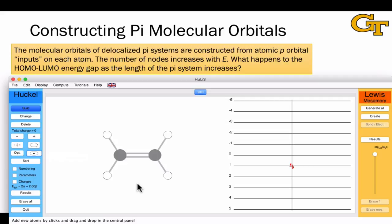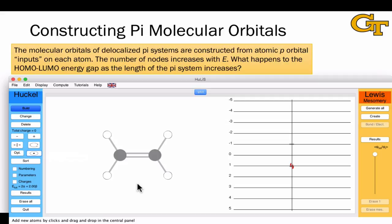A molecular structure of ethylene is shown here, and on the right, we see the pi molecular orbitals of ethylene. Unsurprisingly, we have one filled pi molecular orbital, that is pi bonding molecular orbital, and we have one empty pi star molecular orbital.